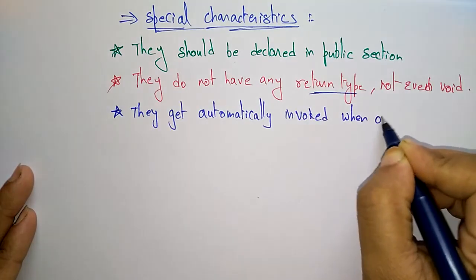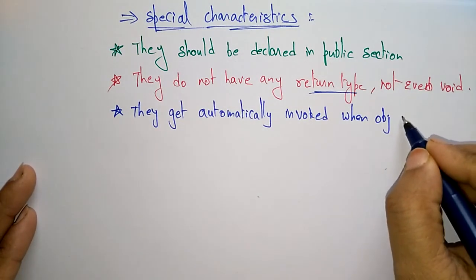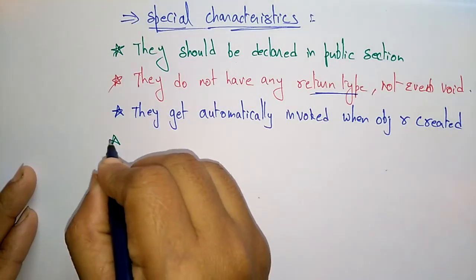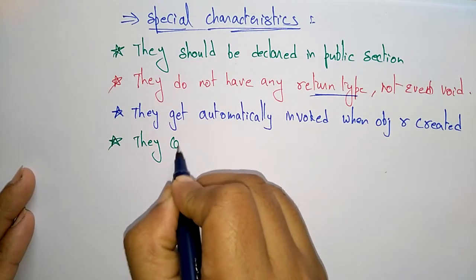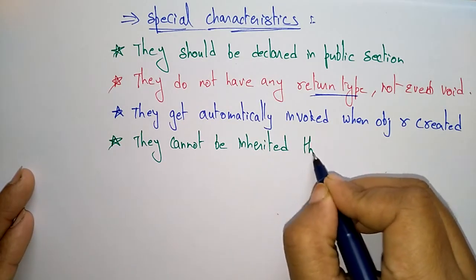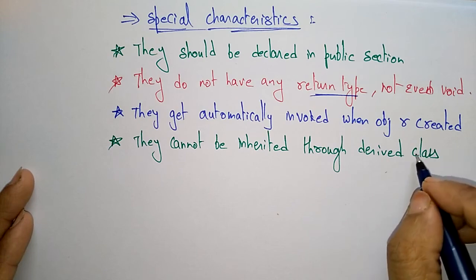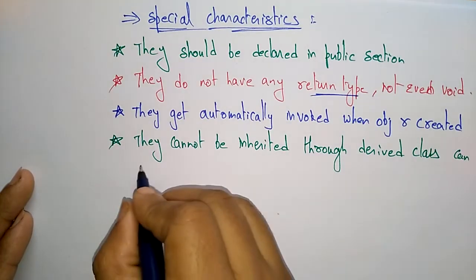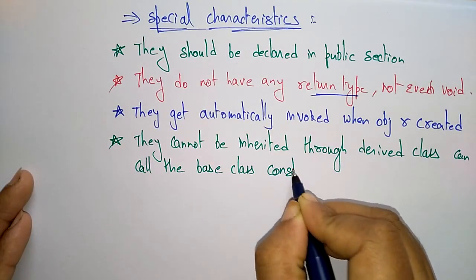Constructors get automatically invoked when an object is created. Also, they cannot be inherited through a derived class — but they can call the base class constructor.